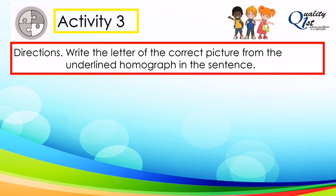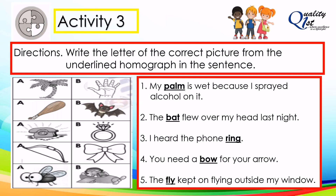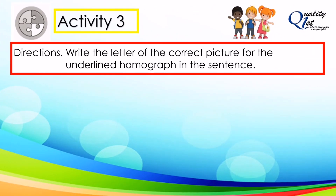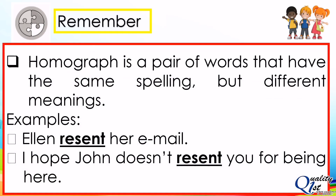For Activity Number 3, you're going to write the letter of the correct picture from the underlined homograph in the sentence.